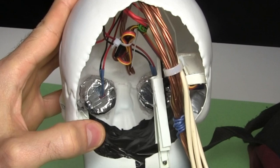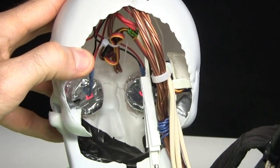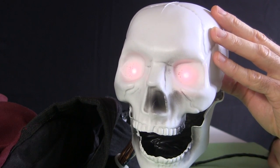Here I've opened up the back of the skull so you can see inside. The eyes are two LEDs, housed inside these foil covered bottle caps, and mounted behind the eye sockets.